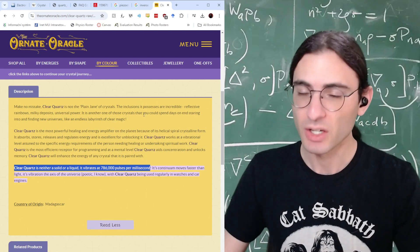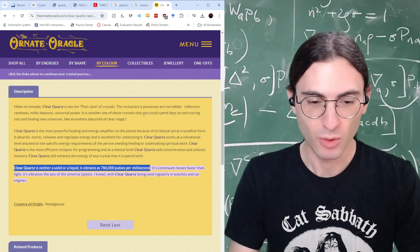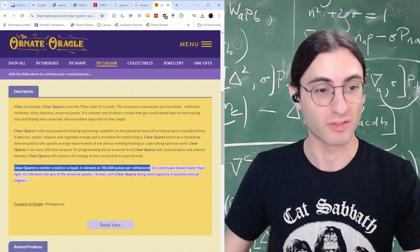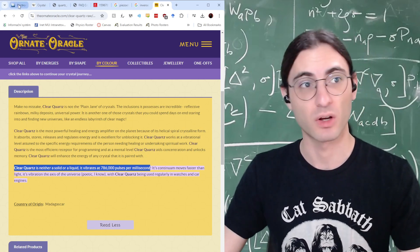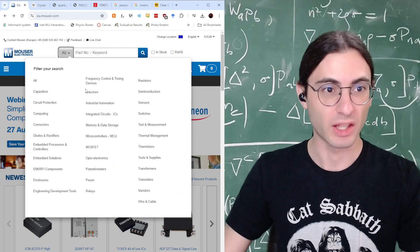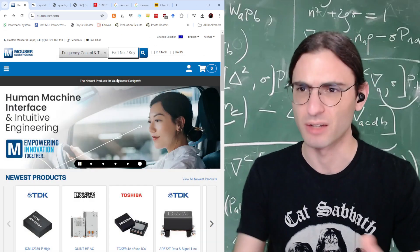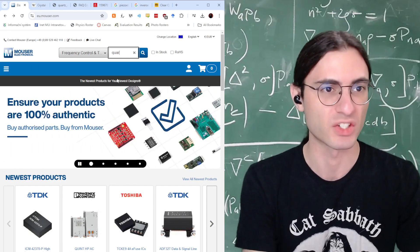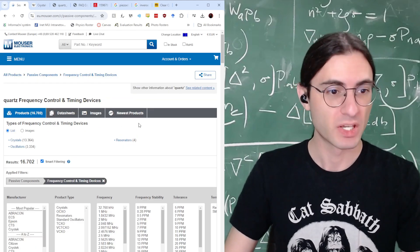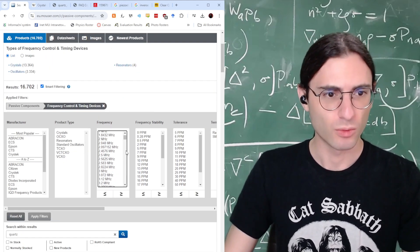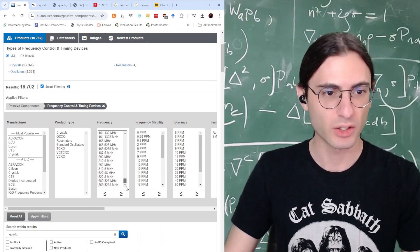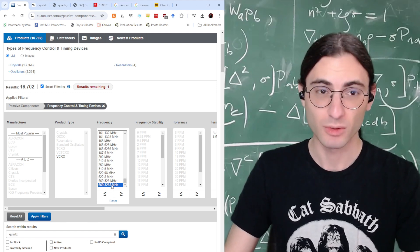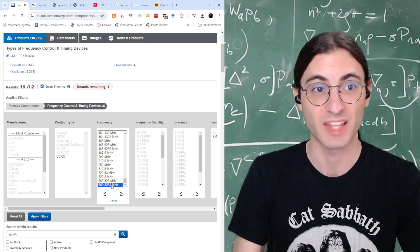Unfortunately, it's not true. And one of the ways that we know it's not true is because we can check the rate at which quartz oscillates, even in electronic devices. So let's go to a common electronic retailer, Mouser. Let's go look at the frequency control and timing devices. Let's just type in quartz and just see what the frequencies are available. So it looks like they go up to 669 megahertz, which is not 786 megahertz or 786,000 pulses per millisecond.